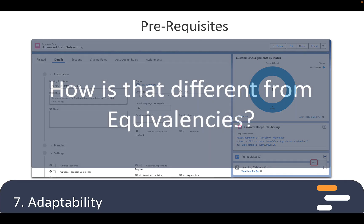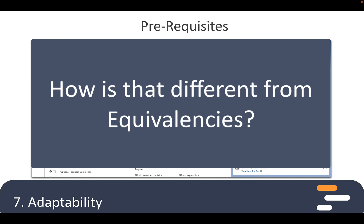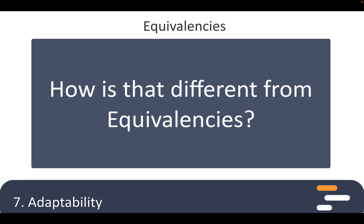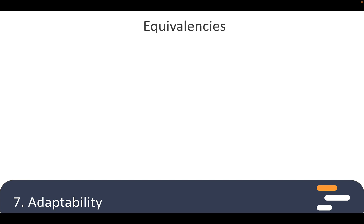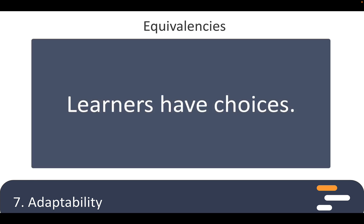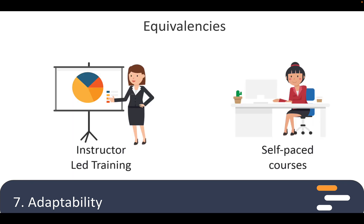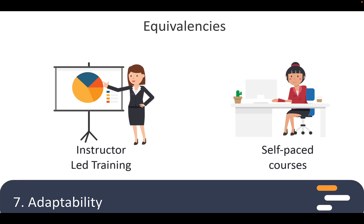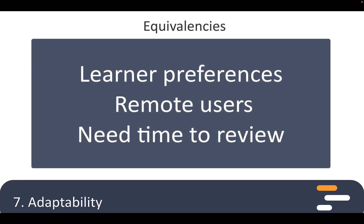So that seems simple enough. How is that different from your other idea about equivalencies? Equivalencies give learners the opportunity to choose the type of learning that they'd like to take. One example is that a learner might choose to attend a face-to-face class — what we'd call an ILT event — and another might decide to go through an equivalent learning plan. This allows users to exercise their preference, and it can also help with users who work remote or need to review content multiple times.